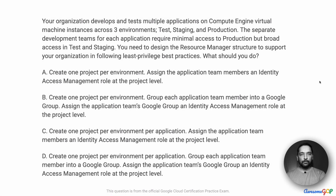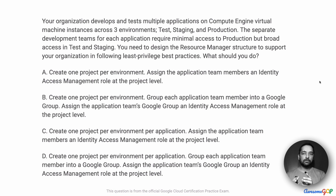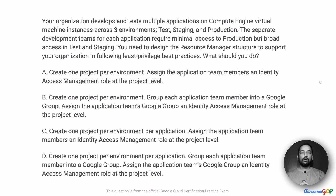In this project scenario, your organization develops and tests multiple applications and Compute Engine virtual machine instances across three environments: testing, staging, and production. These separate development teams for each application require minimal access to production but broad access to testing and staging. You need to design the resource manager structure to support the organization following least privilege best practices. What should you do?